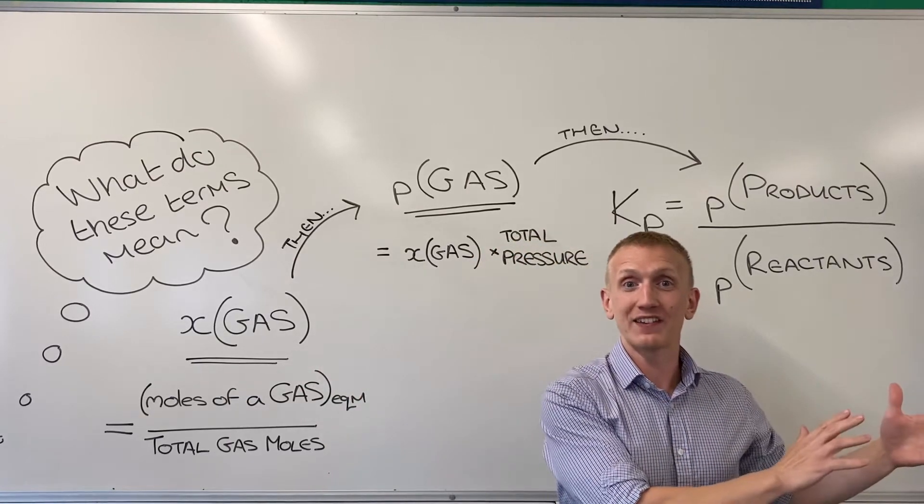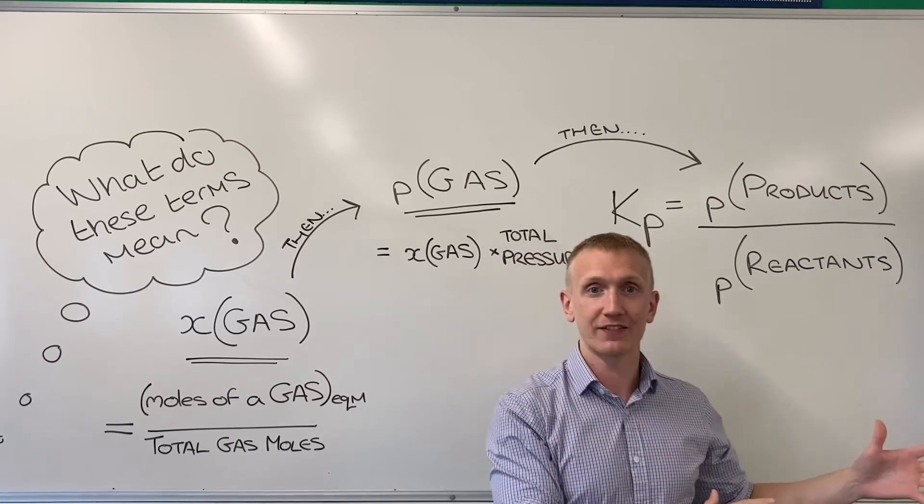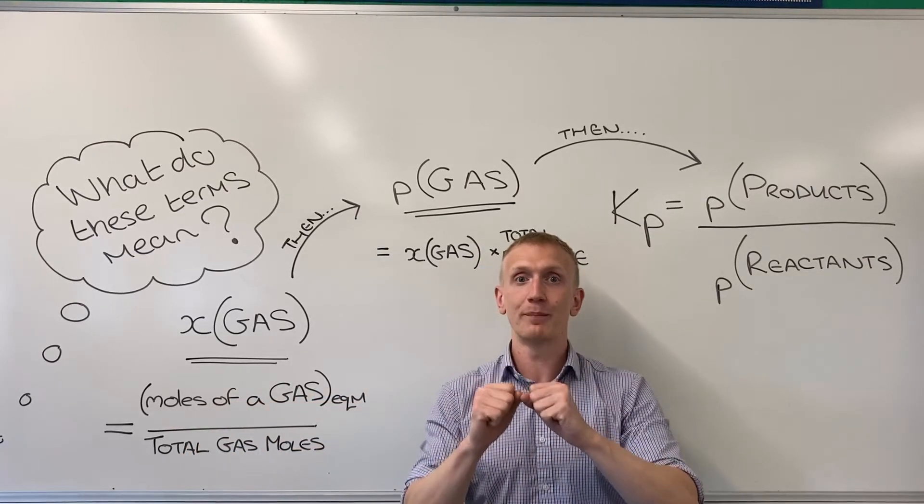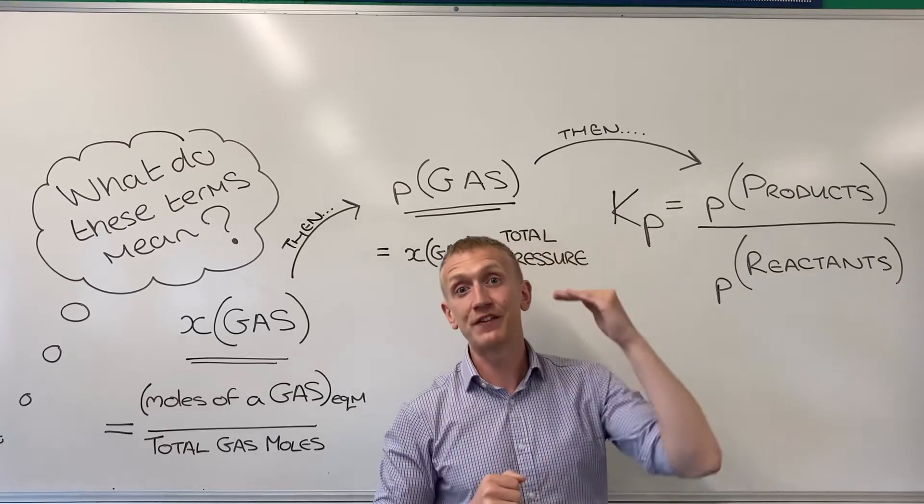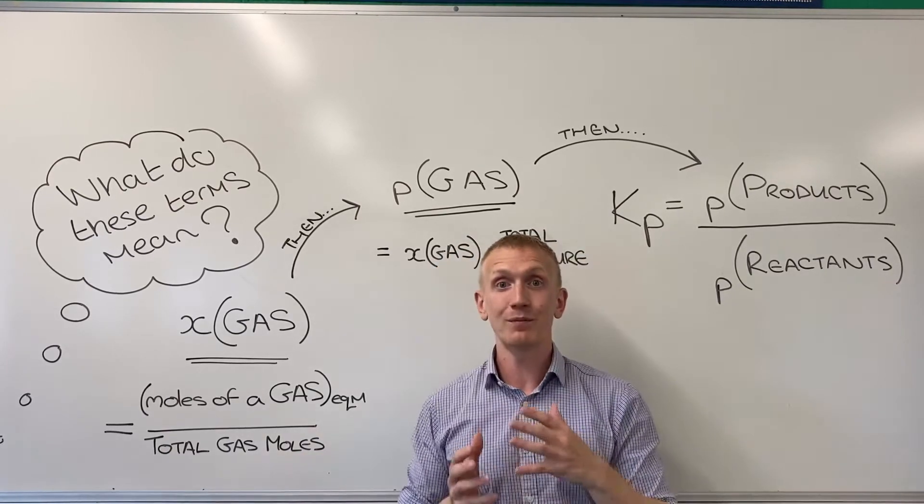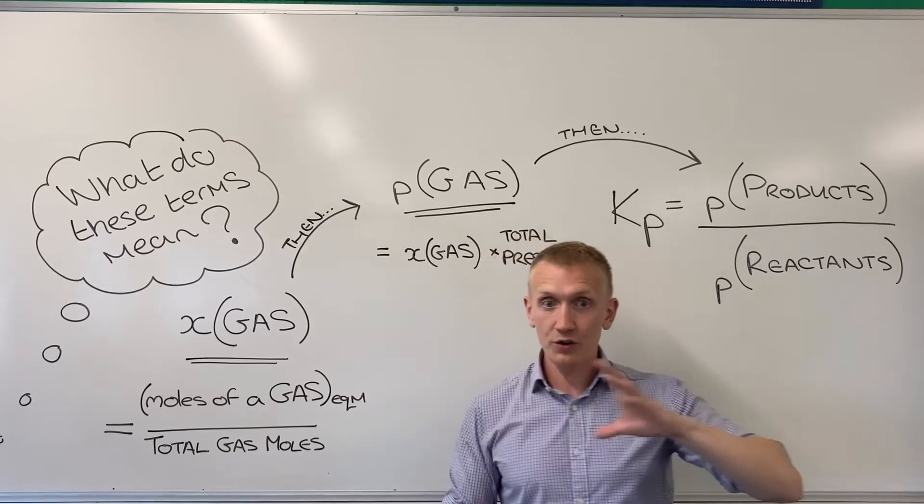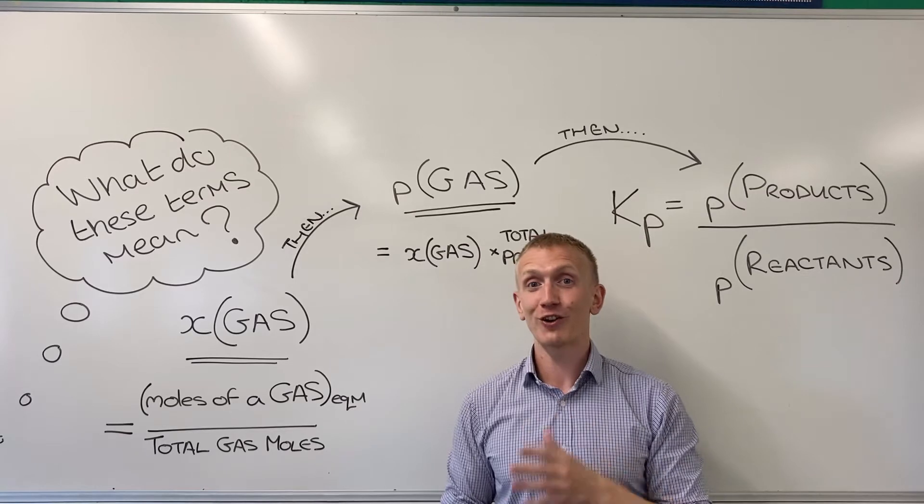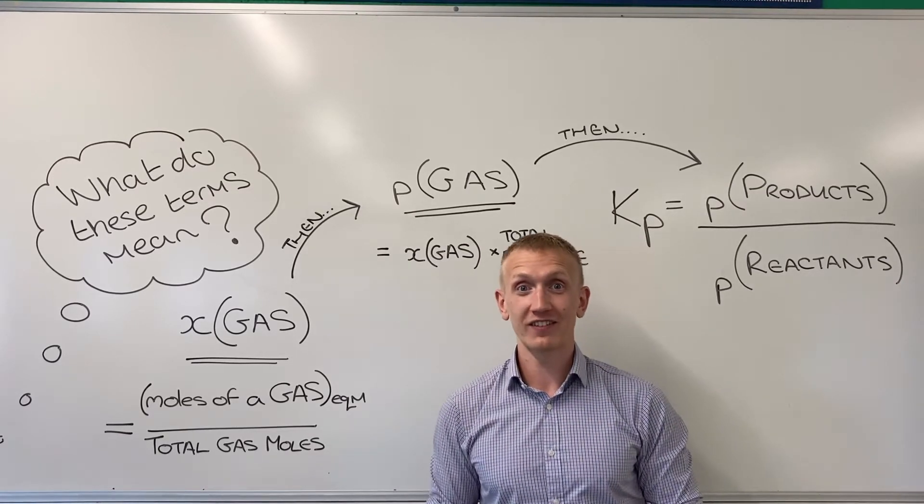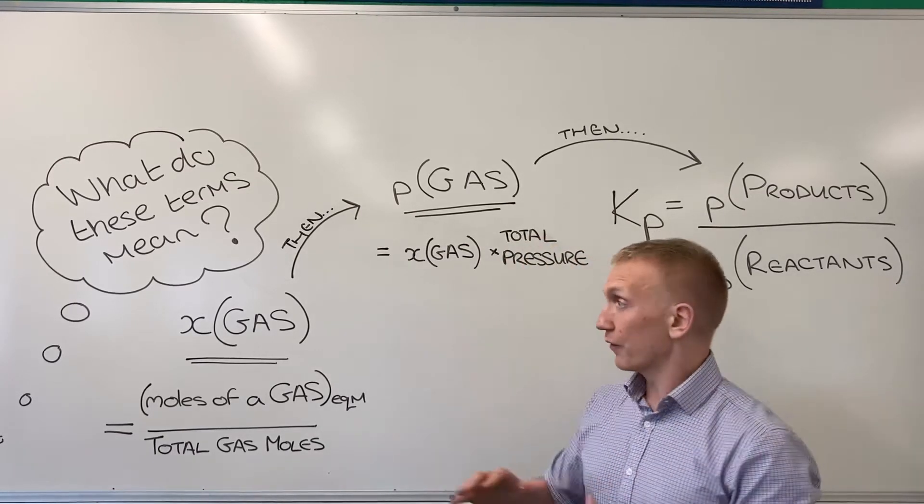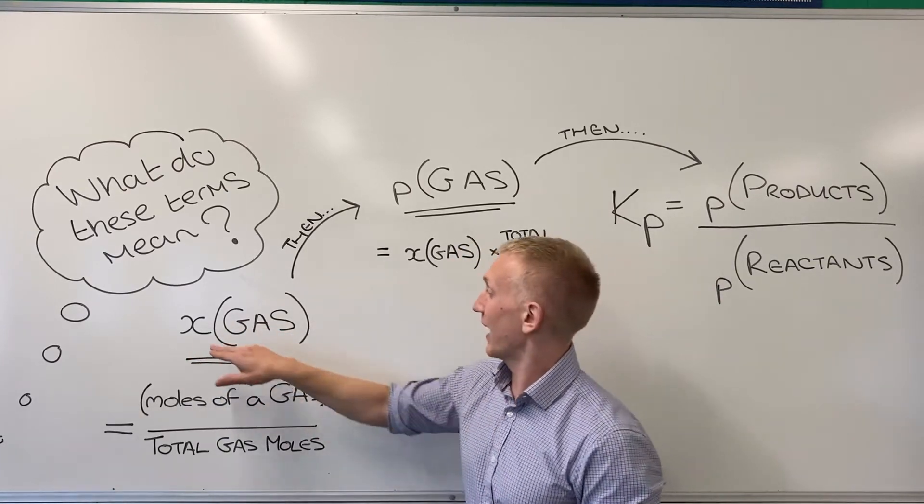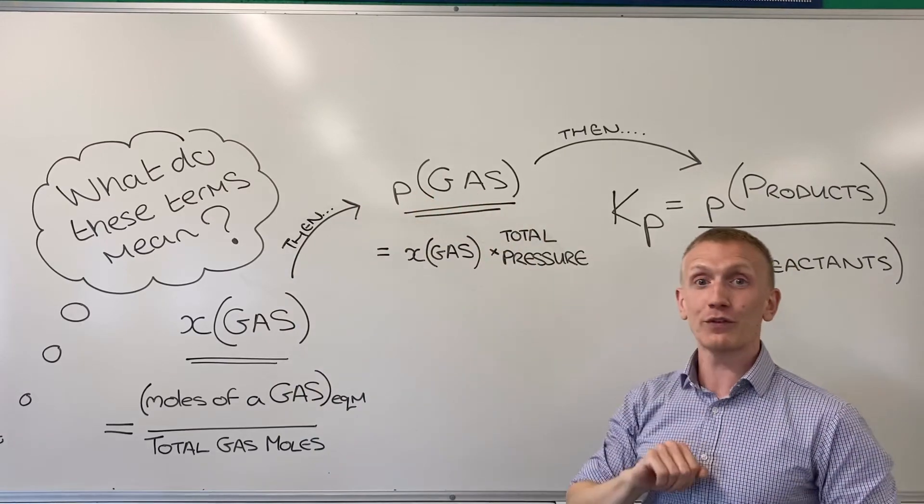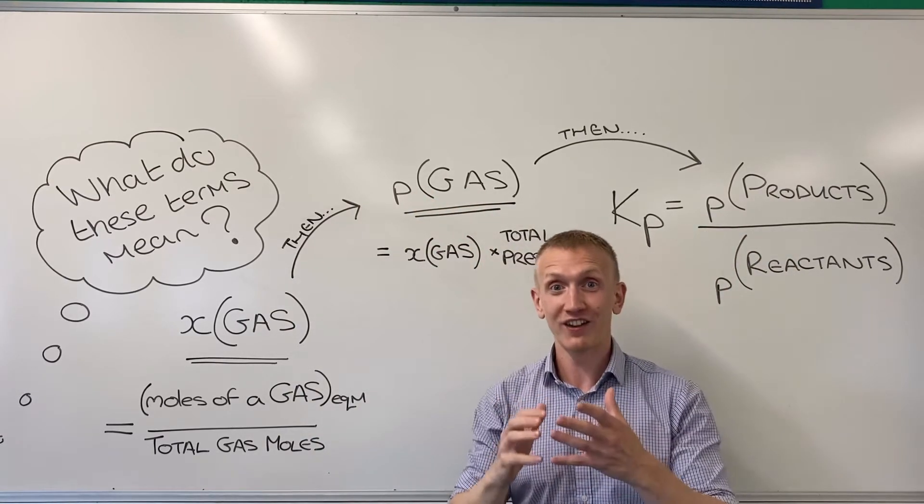Then one at a time, it takes ages, but one at a time go through all the different gaseous components, products and reactants of your equilibrium mixture, and do the moles of that particular component at equilibrium divided by the total gas moles. And you'll end up with a load of values that when you add them up should equal one if you've done it correctly, and then you've got your mole fractions.